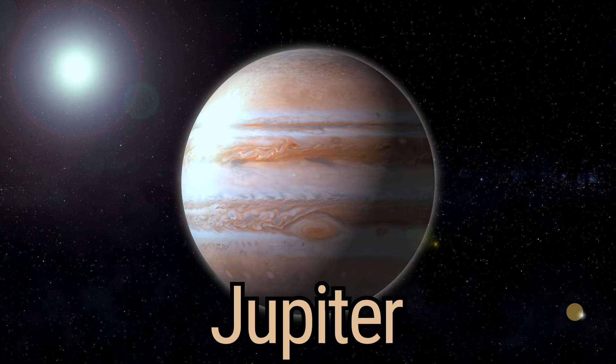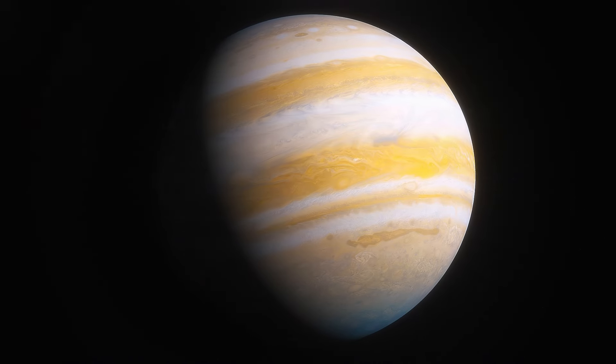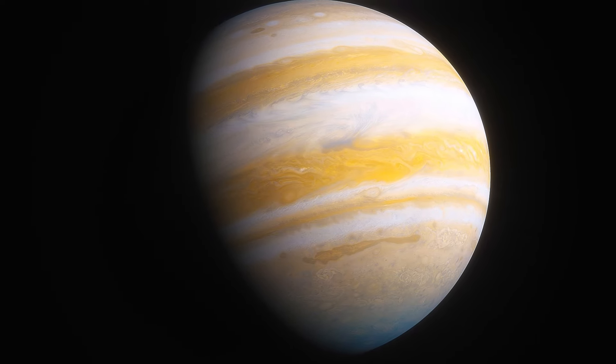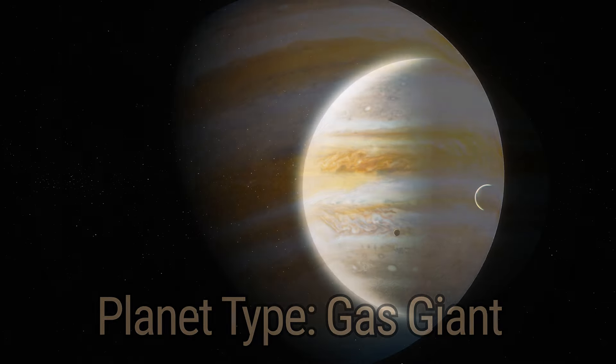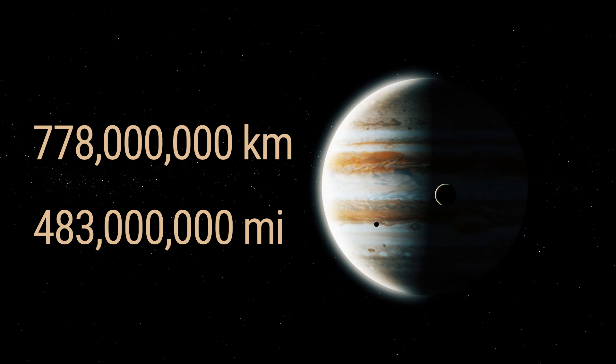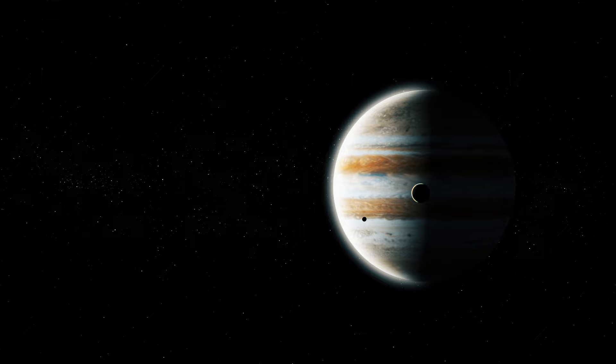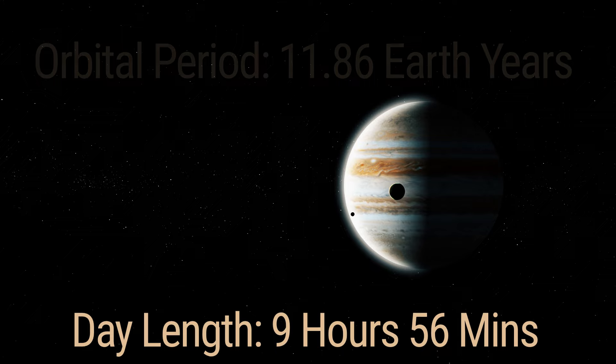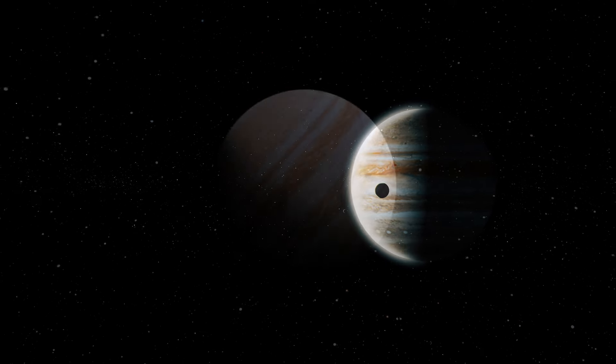Behold Jupiter, the colossal guardian of the solar system. A planet so immense, it could fit all the other planets inside it. Jupiter is a gas giant type planet that orbits the Sun at a staggering average distance of 778 million kilometers, or 483 million miles. Jupiter's year spans almost 12 Earth years, while its day whirls by in just under 10 hours, giving this mighty world the shortest day in the solar system.